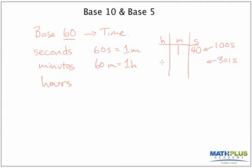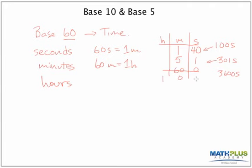If I had three hundred and one seconds and wanted to convert to hours, minutes, and seconds, I could see there are five sixties — that's five minutes, equaling three hundred — with one extra second. So that's five minutes and one second. And if you had thirty-six hundred seconds, that would be sixty minutes and zero seconds. But I'm not allowed to put sixty in any column — when I get sixty I have to regroup. Since sixty minutes is an hour, I'd write it as one hour, no minutes, and no seconds.